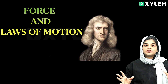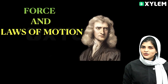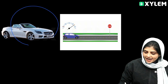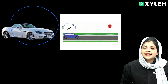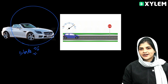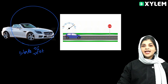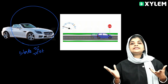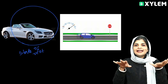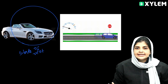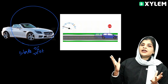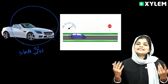Inertia is related to the state of rest and the state of motion. When an object is in rest, it is in the state of rest. When a car is moving, we call it the state of motion.